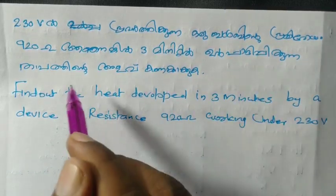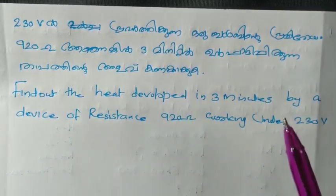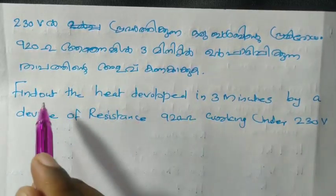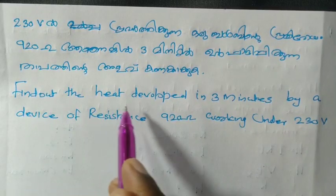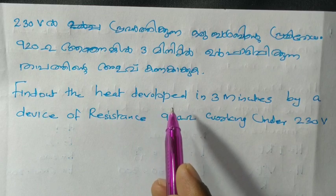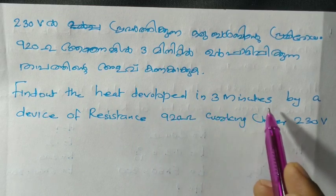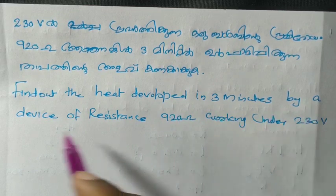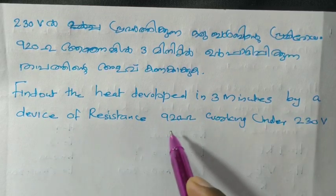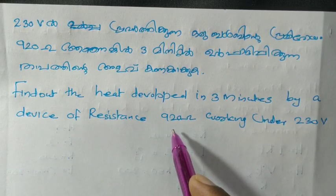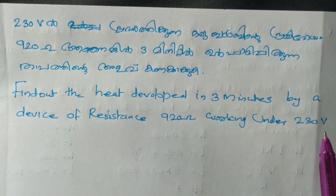Find the heat developed in three minutes by a device of resistance 920 Ohm working under 230 Volt.